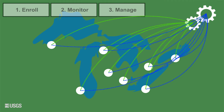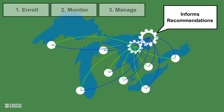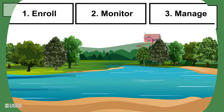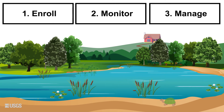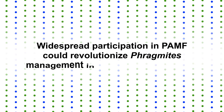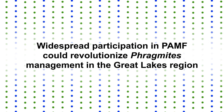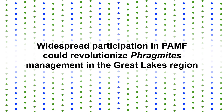As the years pass, data collected from all participants inform the PAMF model and improve guidance for managers. Following PAMF's annual cycle will benefit on-the-ground Phragmites control programs and lead to a region-wide improvement in management effectiveness and efficiency. Widespread participation in PAMF could revolutionize Phragmites management in the Great Lakes region, but this will require critical information from participants like you. Defend the Great Lakes against Phragmites — join PAMF today.